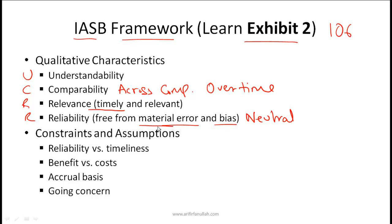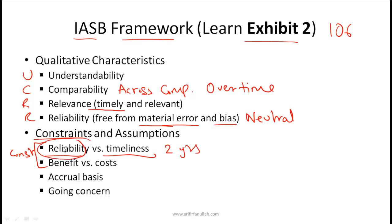Material refers to any information that would have a financial impact or an impact on the sorts of decisions you would make. You also need to memorize constraints and assumptions related to the IASB framework. The two constraints are reliability versus timeliness — this is a trade-off in the sense that if you spend a lot of time creating financial reports you will create something more reliable but that will impact timeliness. If it takes two years to create a very reliable financial statement, the information will be two years old, which means you compromise timeliness.